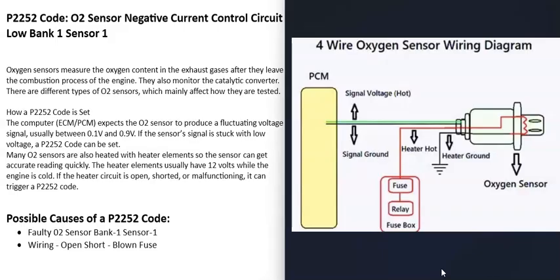It's always a good idea to get a wiring diagram for your specific vehicle so you know what's going on. Most O2 sensors have two parts: the oxygen sensor part that reads how much oxygen is in the exhaust, and a built-in heater element. The oxygen sensor can't get good readings until it gets hot, so the heater element helps it warm up quickly. These heater elements are usually only activated when the engine is cold, for about the first minute or so.